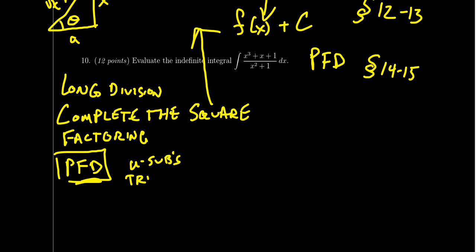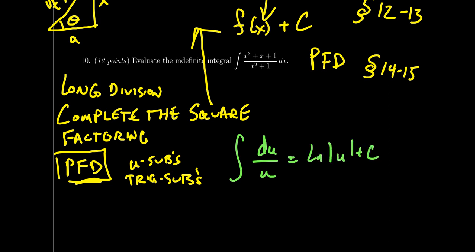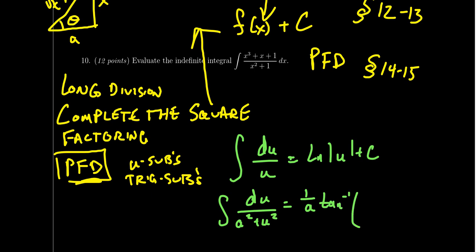You might also have to do some trig subs when you have irreducible quadratics. It's useful to observe that the integral of du/u equals the natural log of |u| plus a constant. Also, the integral of du/(a² + u²) — where u is some function of x and a is a constant — equals (1/a)·arctan(u/a) plus a constant. These two antiderivative forms appear with enough frequency in partial fraction decompositions that it's worth memorizing them or keeping them in a reference.